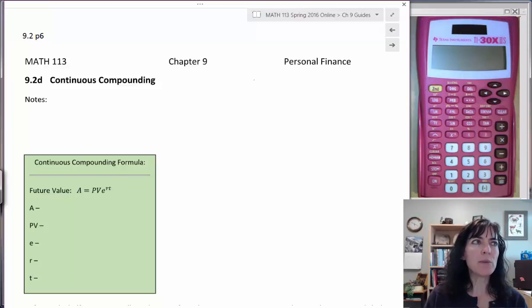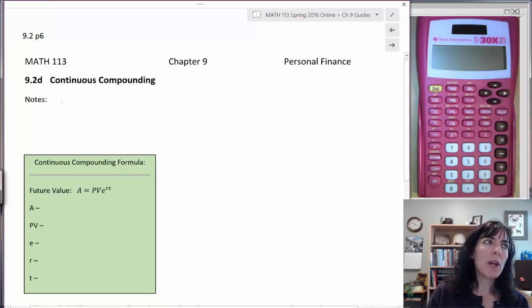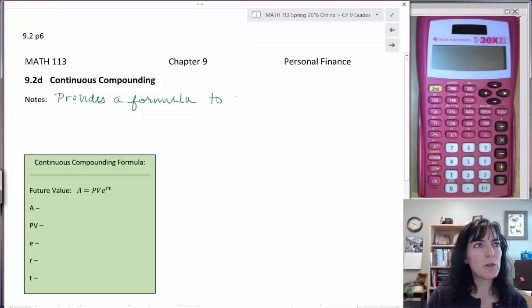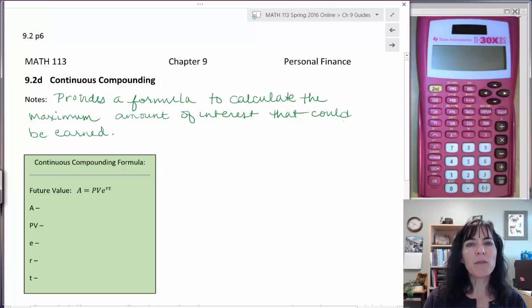So we'll take a look at that concept. Continuous compounding provides a formula to calculate the maximum amount of interest that could be earned for a compounded account. The formula says A equals PV times e to the rt.